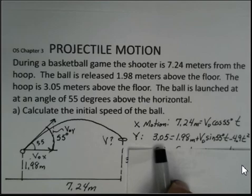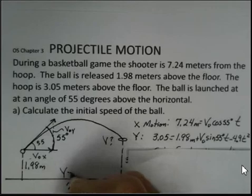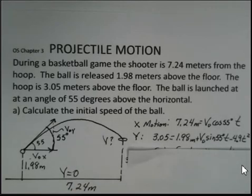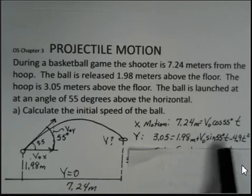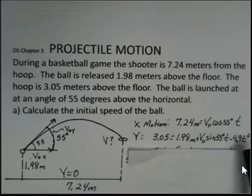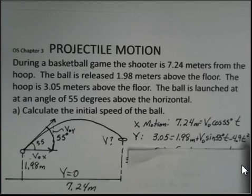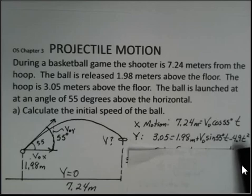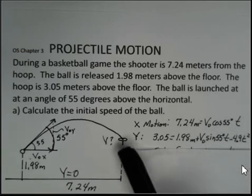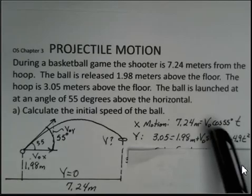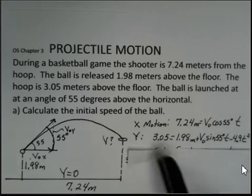Taking a look at the numbers, we're ending up at 3.05 for the y position. I'm calling y equals zero at the basketball floor, and we started at 1.98 meters. We add the initial y velocity multiplied by time, plus one-half acceleration times t squared. I've already computed one-half times minus 9.8 to give us minus 4.9. We have two equations and two unknowns: the time to get to the hoop and V0.